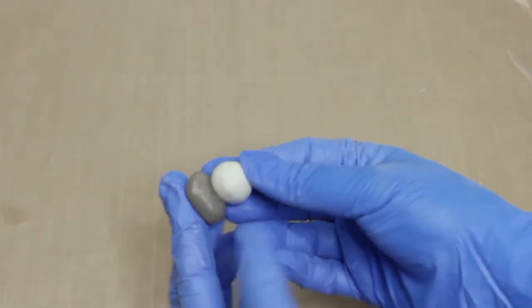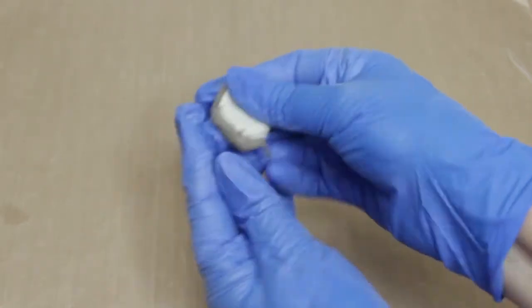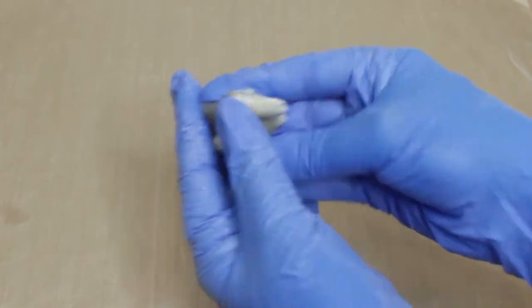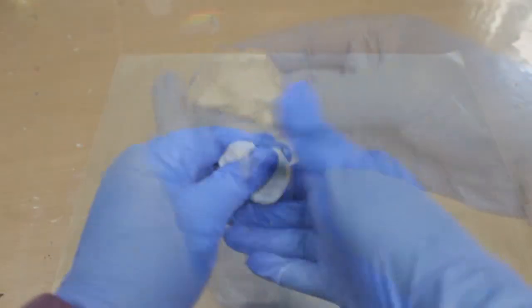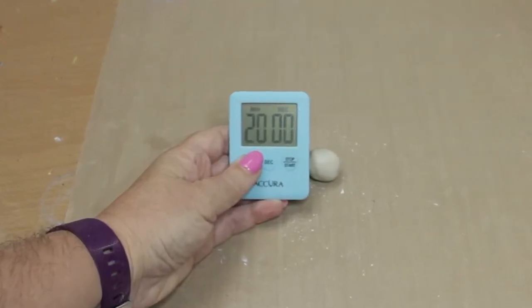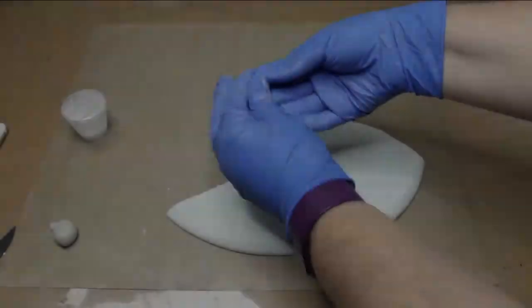I've measured out a small amount of part A and part B in equal quantities. I just eyeball this. They need to be mixed together thoroughly by folding them over each other until they're completely blended. At this point the epoxy clay is too soft and sticky to work with, so I set the timer for 20 minutes so it can firm up a little.